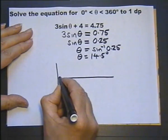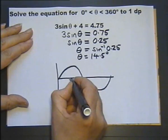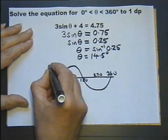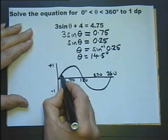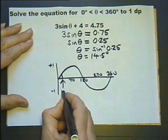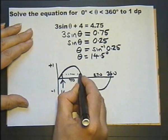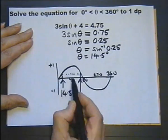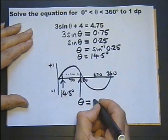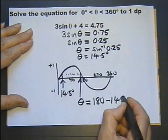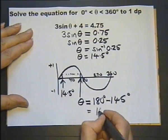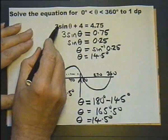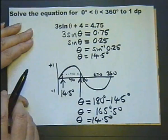Not the best sine graph I've drawn, but it will do. Goes up to plus one, it goes down to minus one. 14 is about there, so in other words, if I go across here, then there is my other value for theta. Looking at the symmetry, that is representing 14.5 degrees, so that's representing 14.5 degrees. So it's 180 go back 14.5 degrees, and that gives us 165 degrees. So there's our two values for theta when in this equation it comes to 4.75.